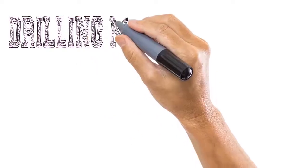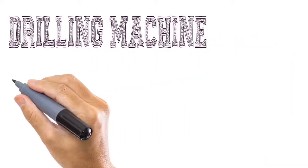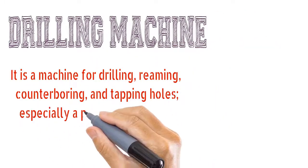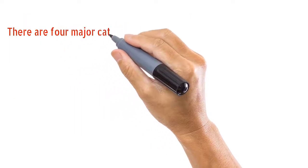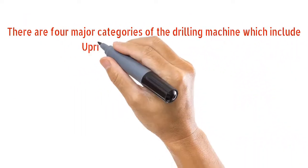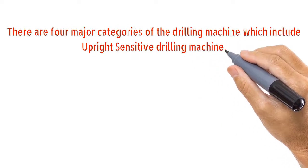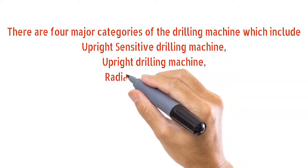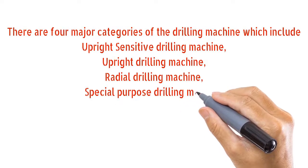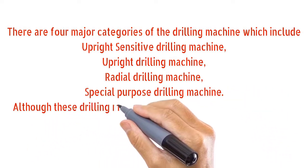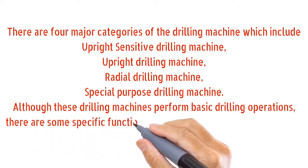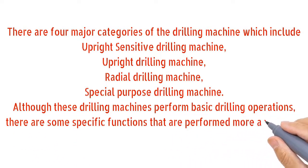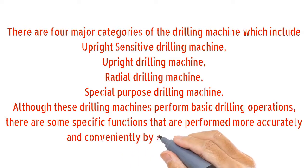A drilling machine is used for drilling, reaming, counter-boring, and tapping holes — especially a power machine for drilling holes in metal. There are four major categories of the drilling machine: the upright sensitive drilling machine, upright drilling machine, radial drilling machine, and special purpose drilling machine. Although these drilling machines perform basic drilling operations, there are some specific functions that are performed more accurately and conveniently by each of these types.